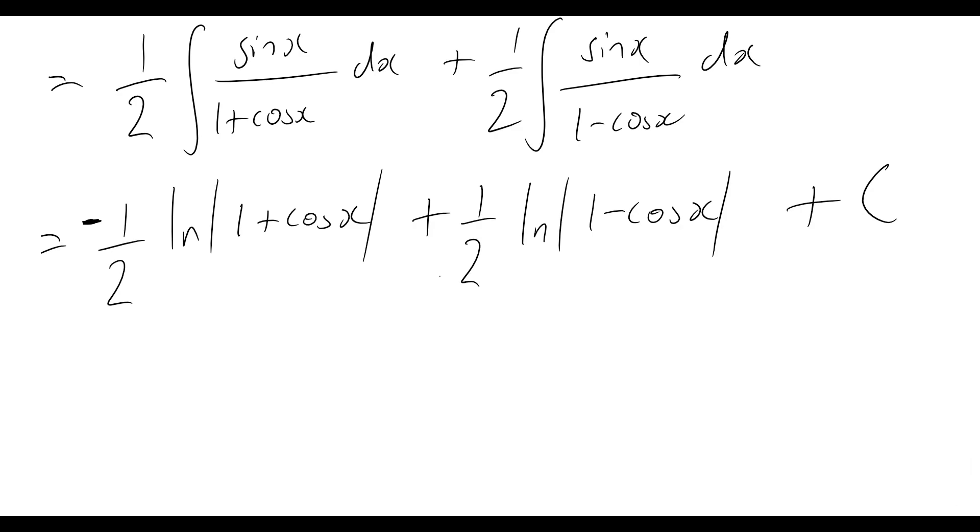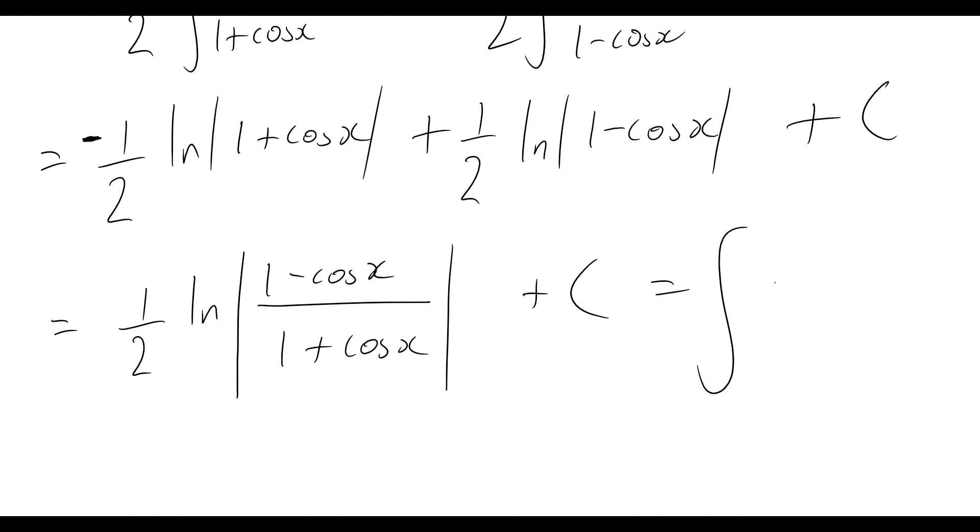So last step here. We can simplify this a little bit further. So first of all, there is a common term of one half and we should also note that we are taking the difference of two logarithm terms here. So what that means now is that we can rewrite this finally as one half times the natural logarithm of 1 minus cos x all over 1 plus cos x plus c and that is equal to the integral of cosec x dx and there we are.